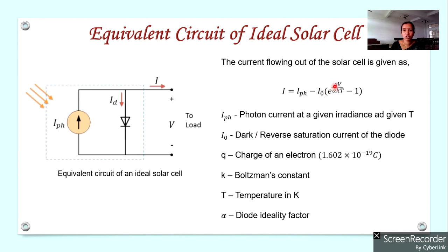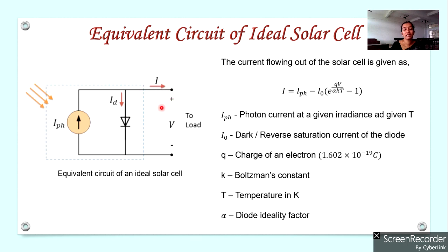In the diode equation, Q is the charge of an electron (1.602 × 10⁻¹⁹ Coulombs), V is the voltage across the diode, alpha (α) is the diode ideality factor, K is Boltzmann's constant, and T is the temperature of the system in Kelvin. This is the equation for the current obtained from an ideal solar cell.